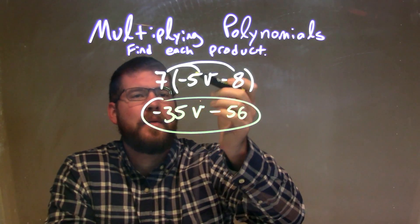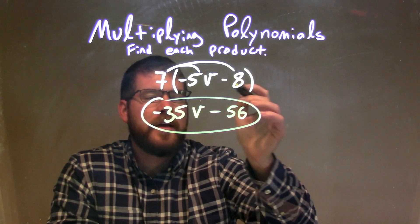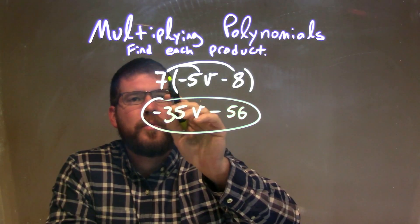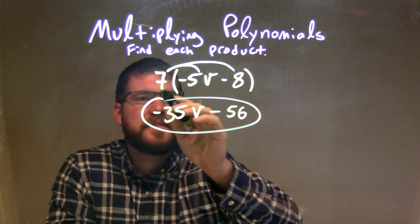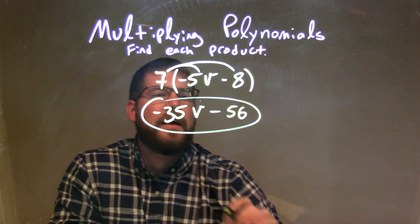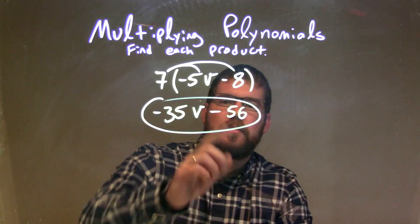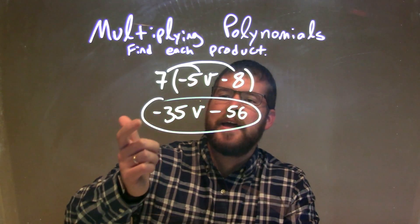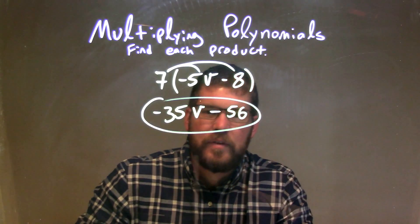So let's recap. We're given 7 times negative 5v minus 8 in parentheses. There's nothing to simplify inside the parentheses, so we distribute 7 to both parts. 7 times negative 5v was negative 35v, and 7 times 8 was 56 in subtraction between the two. And so we have our final answer of negative 35v minus 56.